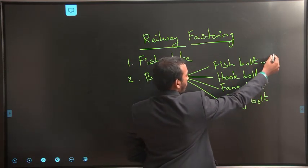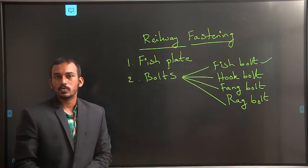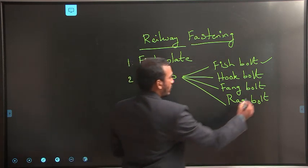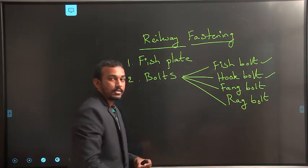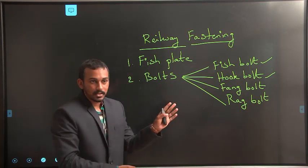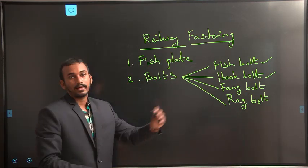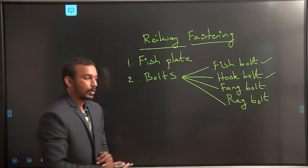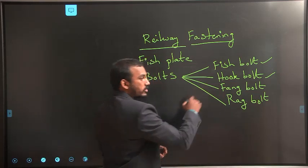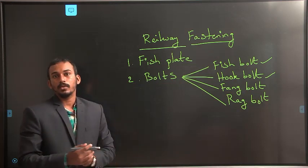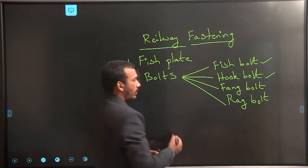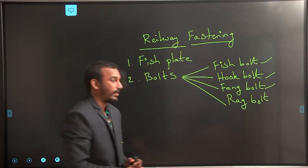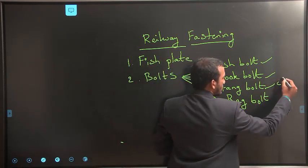Coming to the first one, fish bolt. Fish bolt is generally used to connect fish plates to the rails. The second one is hook bolt. Hook bolt is used to connect timber sleepers to the bridge gutter rails. There is a type of joint called bridge gutter joint, so in that joint we use hook bolts to connect bridge gutter to the timber sleepers. Coming to the next one, fang bolts. Fang bolts are used to connect chairs to the sleepers.